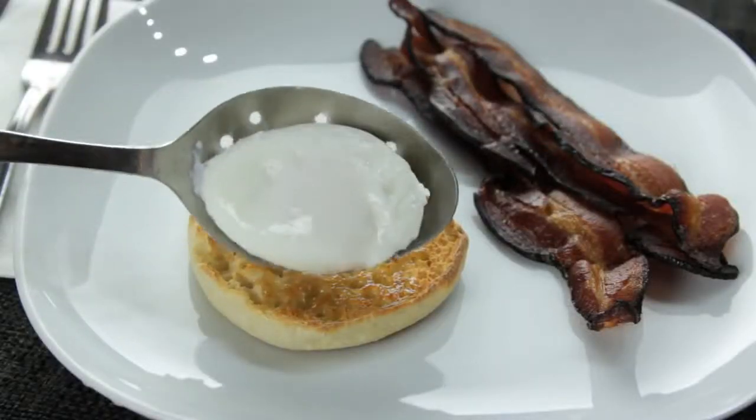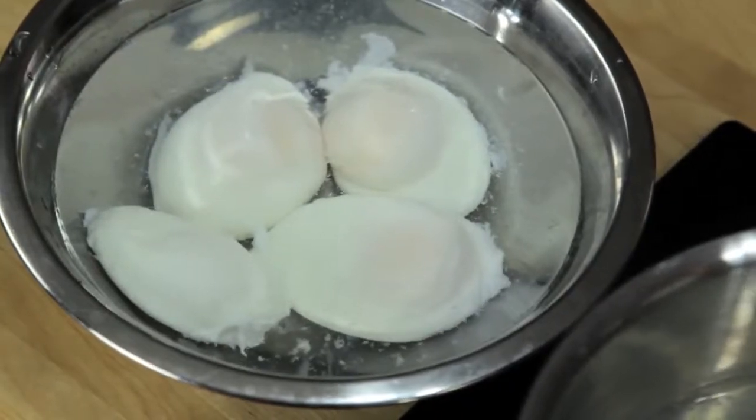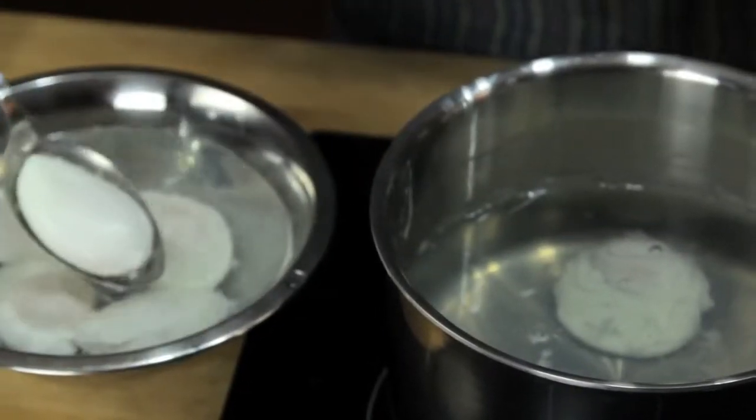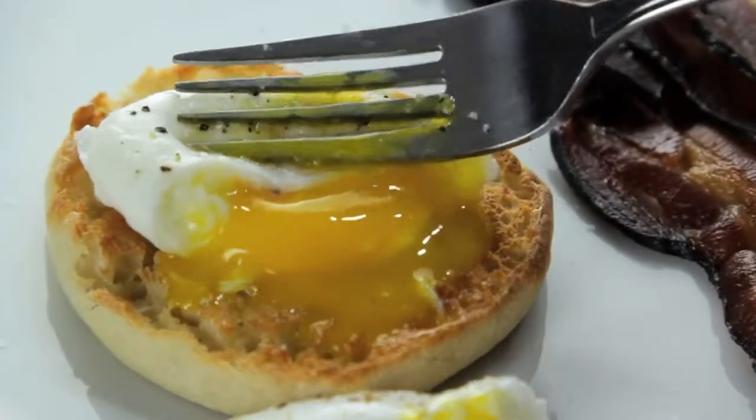After about three and a half to four minutes, this is what you've got. You can even cook them ahead of time and store them submerged in cold water in the fridge for up to a few days. To reheat them, just transfer them to a bowl of hot water for a few minutes just before serving. FoodLab signing out.